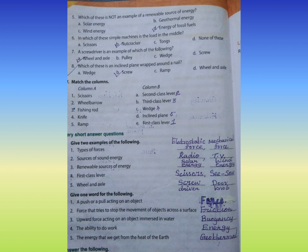Number three: Fishing rod. Answer B, third class lever. Number four: Knife. C, wedge. Number five: Ramp. Answer D, inclined plane.